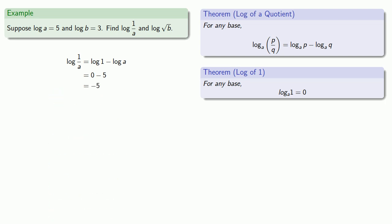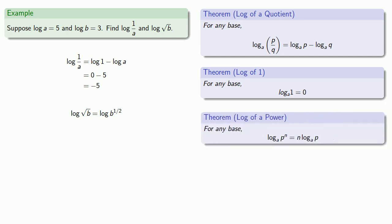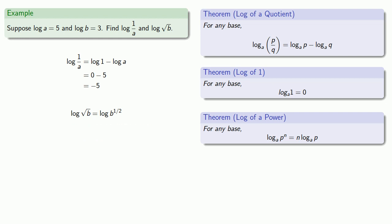How about the log of the square root of b? A square root is the same as an exponent of one half, so log of square root of b is the same as log of b to the power one half. We know how to handle the log of a power — the exponent comes out front. Since log of b is 3, we substitute that in and do the arithmetic.